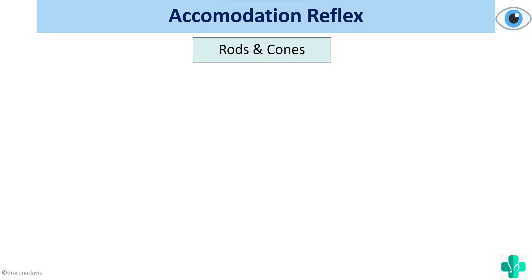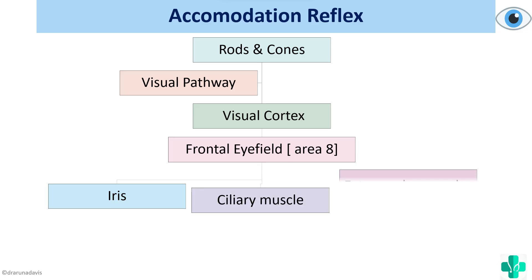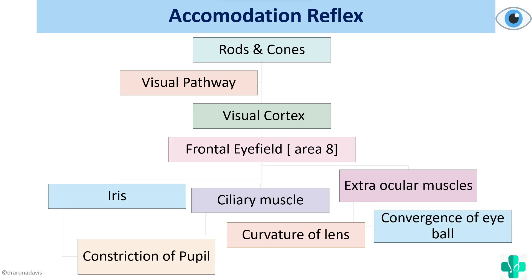To summarize the accommodation reflex pathway: from rods and cones, the visual pathway information reaches the visual cortex, then the frontal eye field, then the nucleus of the oculomotor nerve — both the somatic motor and Edinger-Westphal nucleus — reaching the iris, ciliary muscle, and medial rectus. Constriction of the pupil occurs because it reaches the pupillary constrictors; increased lens curvature occurs via the ciliary muscle; and convergence of the eyeball completes the three C's of accommodation reflex.